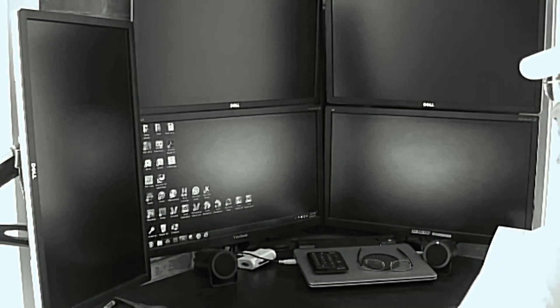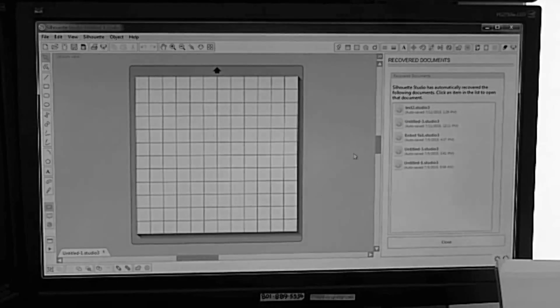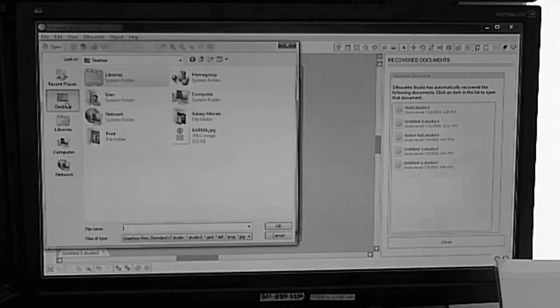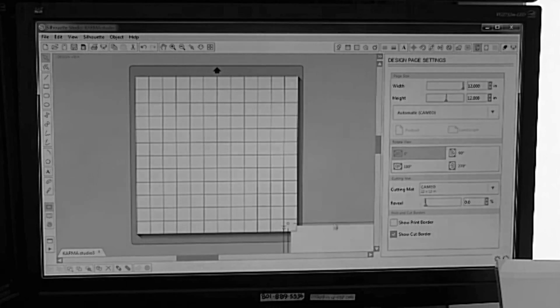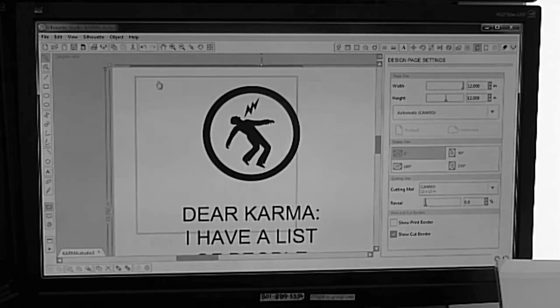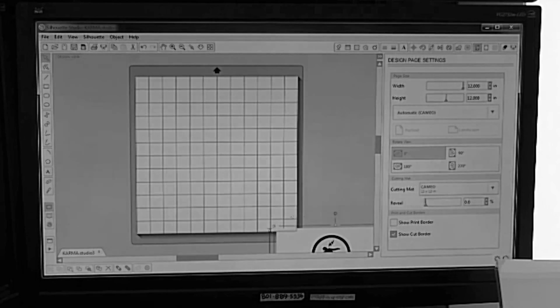I've saved that as a JPEG and I'm now opening the Silhouette Cameo software and I'm finding that Photoshop image and bringing it into Silhouette here. I'm making it smaller so that it fits in the 12 by 12 inch square.